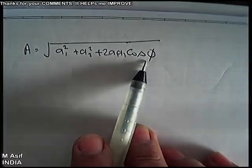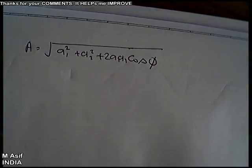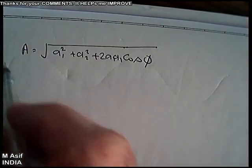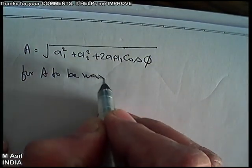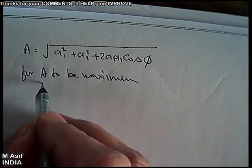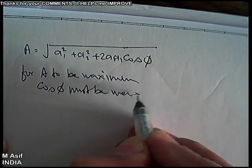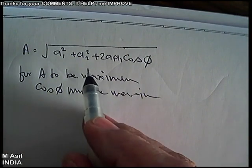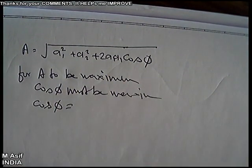So whether a maxima or minima forms, for two given waves, depends only on the phase difference φ. For A to be maximum, cosφ must be maximum, because a1 and a2 are not changing. The maximum value of cosφ is 1.